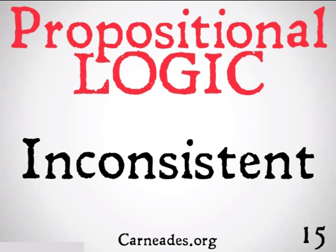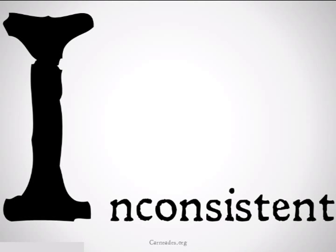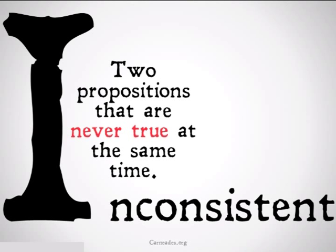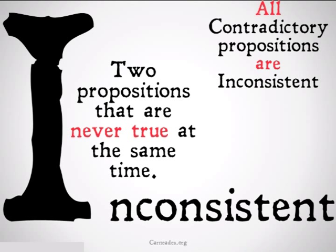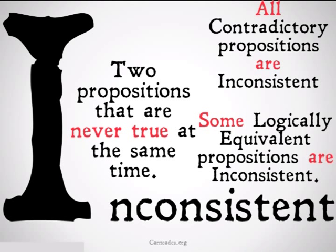This is going to be the opposite of consistent propositions. An inconsistent proposition is defined as two propositions that are never true at the same time. All contradictory propositions are inconsistent, and even some logically equivalent propositions are inconsistent — those are the logically equivalent propositions whose final truth tables are both all false.